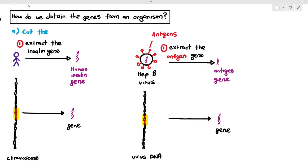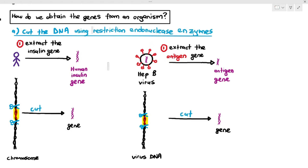Some students will immediately say: if we just want that small part of the DNA, all we have to do is cut the DNA, and when we cut it, we will get the gene that we want. So the question is, how do we cut the DNA? That's the first way we can obtain genes from an organism — we can cut the DNA using an enzyme known as the restriction endonuclease. You need to remember this type of enzyme.